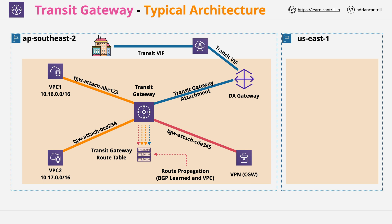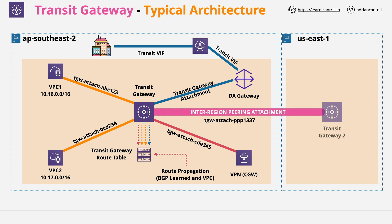By default, the route table is used by all of the attachments of the Transit Gateway. You can also peer Transit Gateways with other Transit Gateways in different regions — up to 50 other Transit Gateways per Transit Gateway — and all of those Transit Gateways can also peer with other Transit Gateways. This is what you should already know about the Transit Gateway product.